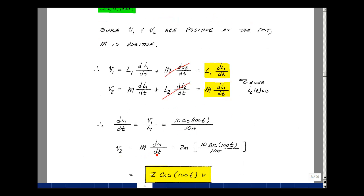So then V2 is equal to M Di1/dt, which would be 2 millihenries, and then this term right over here for Di1/dt. The millis cancel, and I'm left with 2 times 10 divided by 10, which is equal to 2, and then cosine 100t.